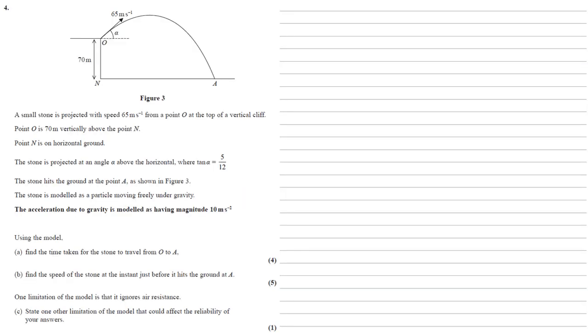A small stone is projected with speed 65 metres per second from a point O at the top of a vertical cliff. Point O is 70 metres vertically above the point N. Point N is on horizontal ground.